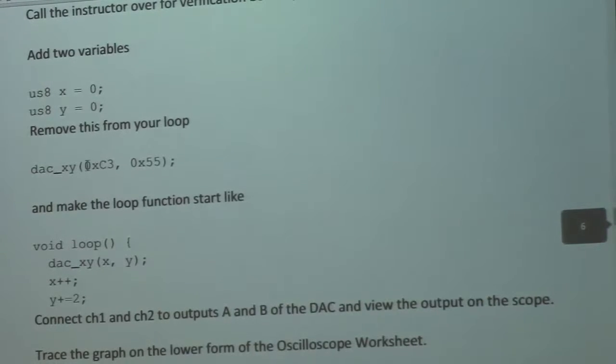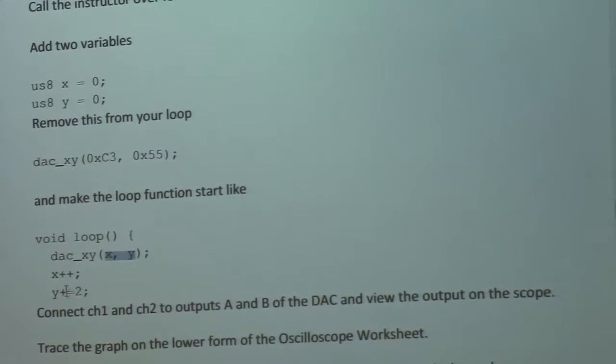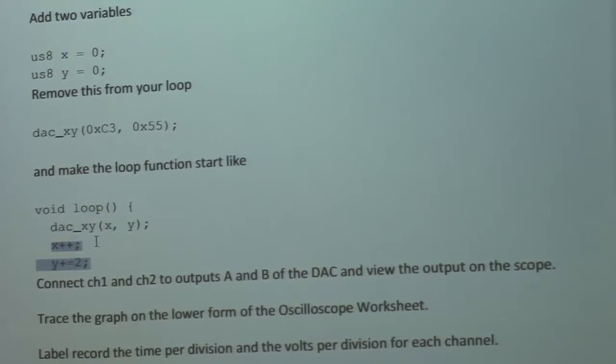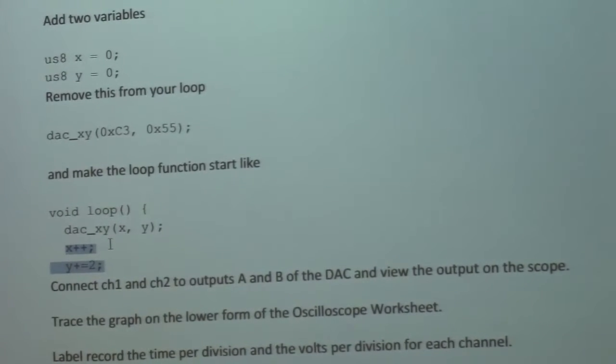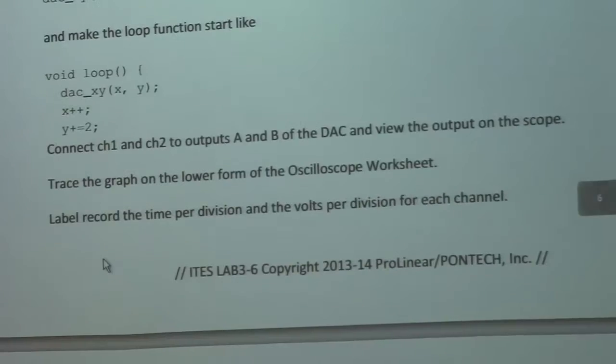And then it has you modify the main loop. And so instead of transmitting C3 and 5.5, you're going to transmit two values, X and Y, that every time through the loop are changing. And so we'll be able to look at the DAC outputs on the screen and see a little sawtooth loop. And one will be twice the frequency of the other.